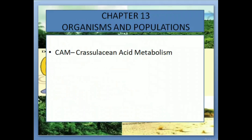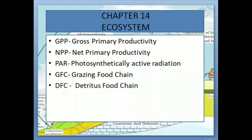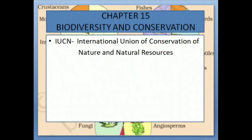Chapter 13: Organisms and Population. CAM: Crassulacean Acid Metabolism. Chapter 14: Ecosystem. GPP: Gross Primary Productivity. NPP: Net Primary Productivity. PAR: Photosynthetically Active Radiation. GFC: Grazing Food Chain. DFC: Detritus Food Chain.